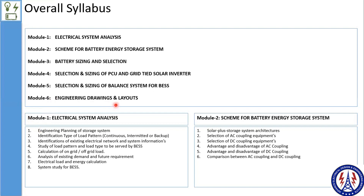You can consider Modules 1 through 5 as the learning phase, and Module 6 would be the implementation of it. Every individual module deals with specific objectives. Module 1 is a complete brush-up of your thoughts. Module 2 is about clearing concepts related to the network. Module 3 is related to the battery. Module 4 is related to the PCU — the electronic and electrical devices. Module 5 is balance of the system. Module 6 would be your engineering drawings and layout. That would be the journey we are going to address.